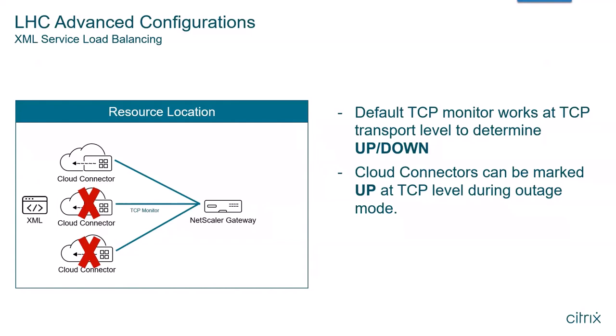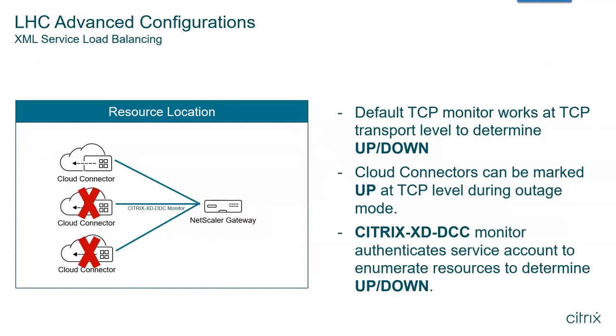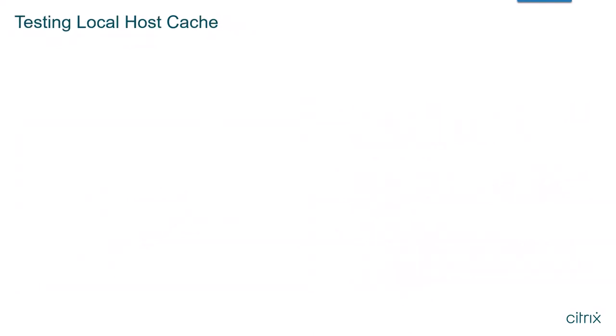Rather than using the default TCP monitor, the Citrix XD-DDC monitor should be configured for the services. This monitor is designed to send XML requests to the connector and check if the connector responds with an HTTP 200 OK. If secondary connectors are in the initial HA phase of outage mode, the XML service will be unavailable and respond with an HTTP 503 status. The load balancer will then be able to mark the server or service group member as down or unavailable. Citrix has created a PowerShell module that can assist in configuring outage mode, gathering information on connector readiness, and monitoring brokering data during outage mode scenarios or testing.